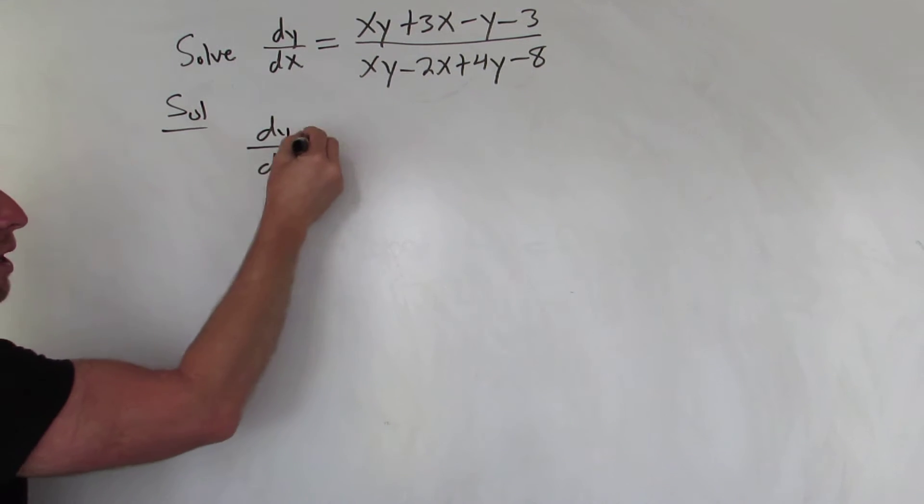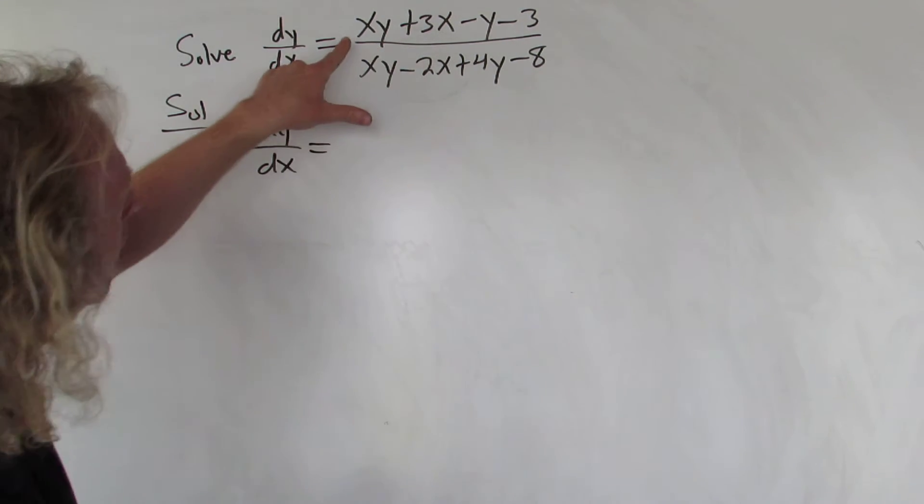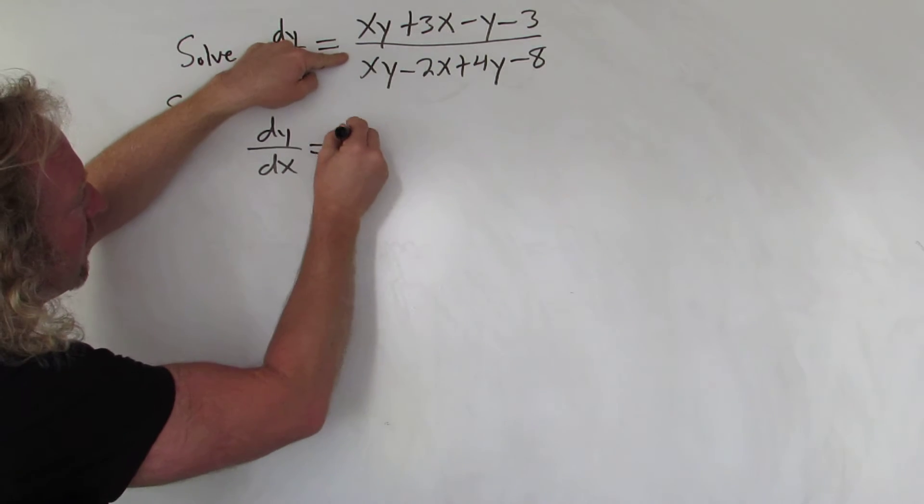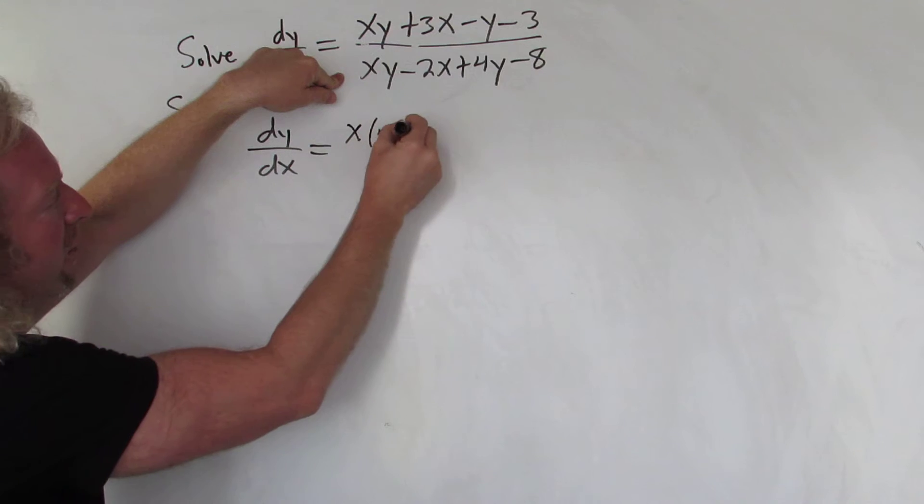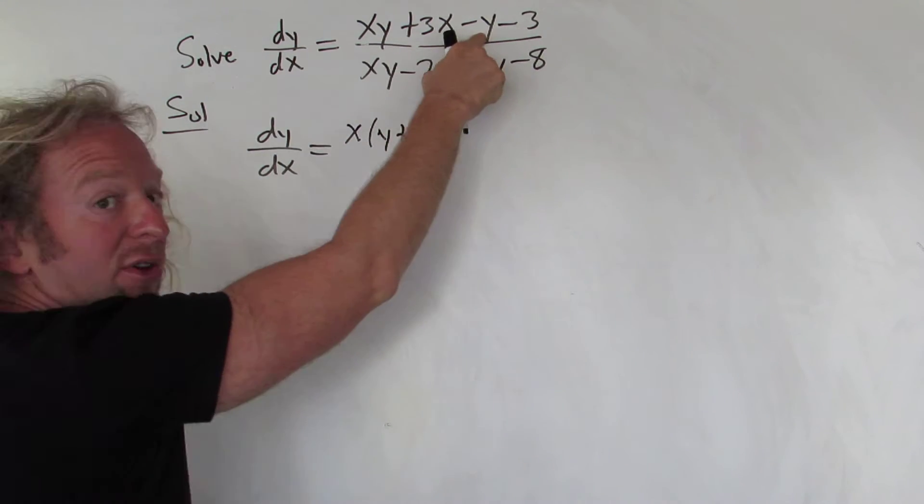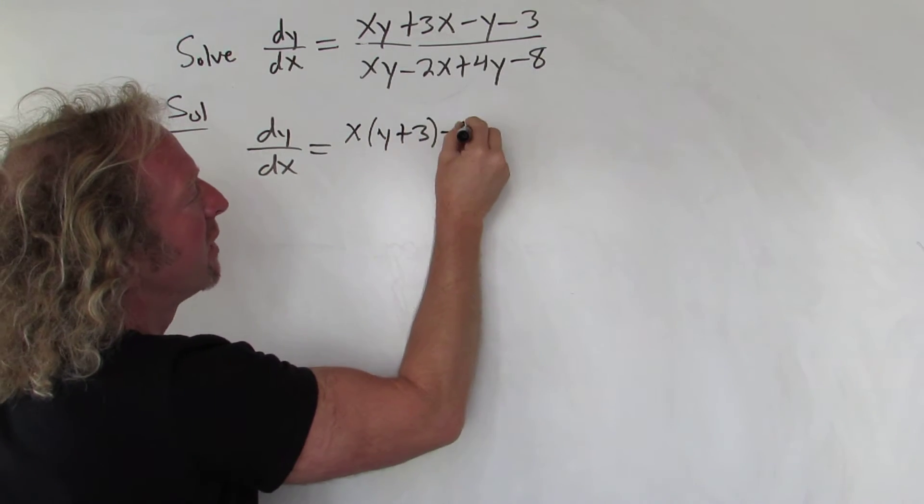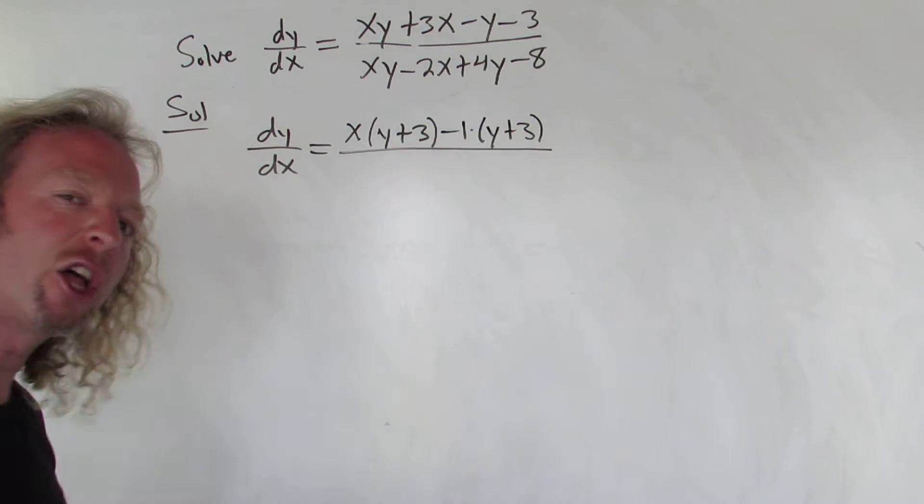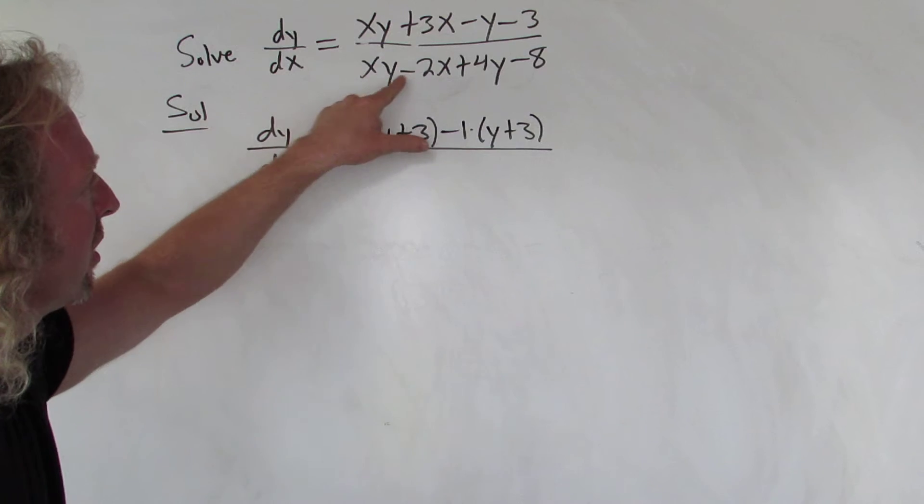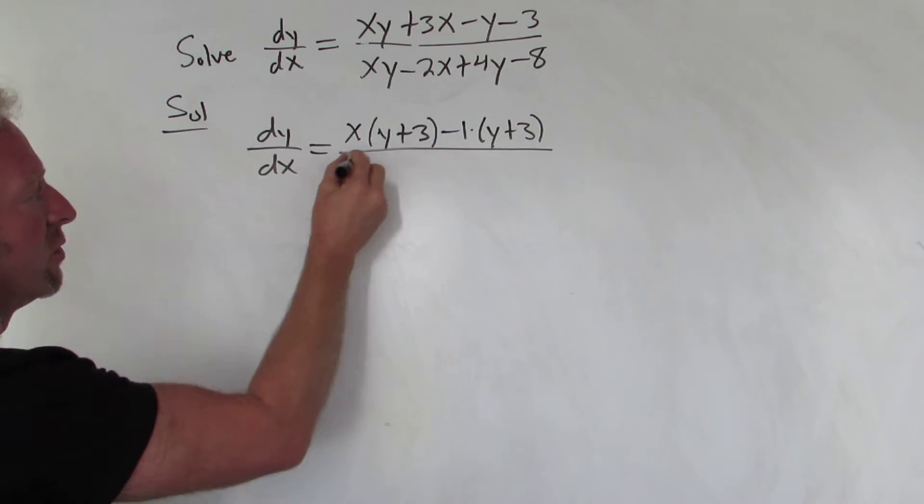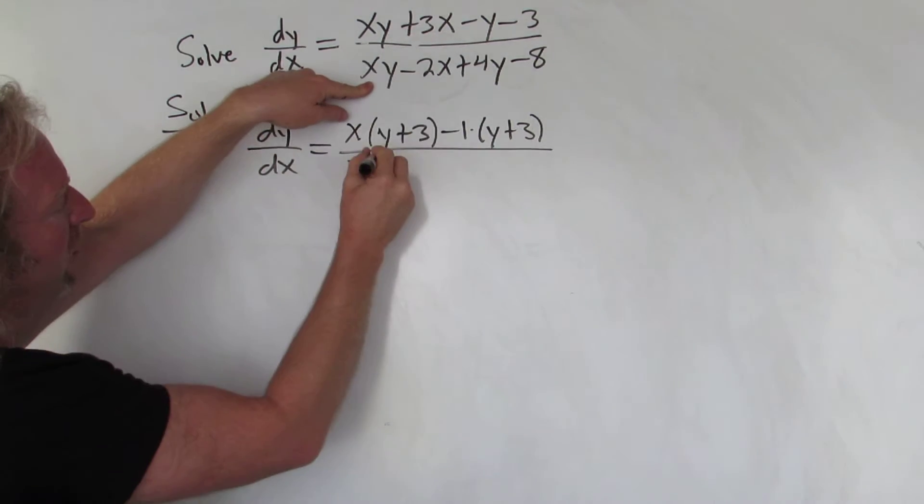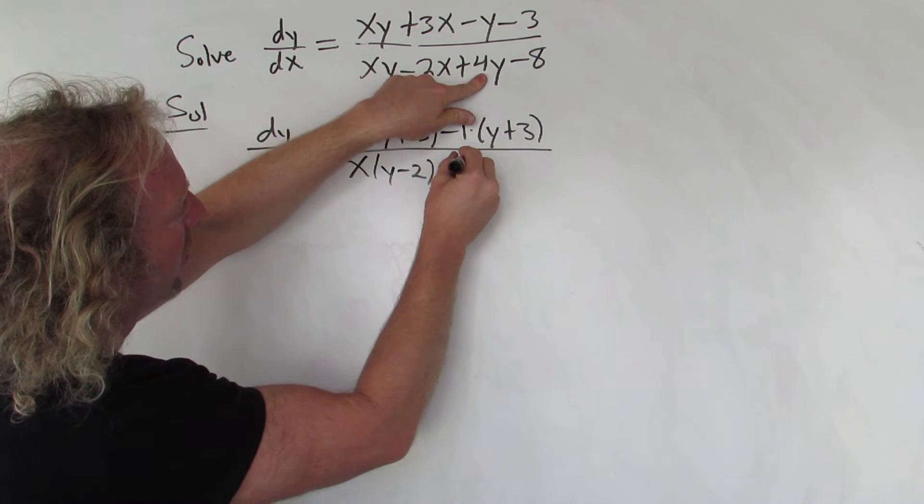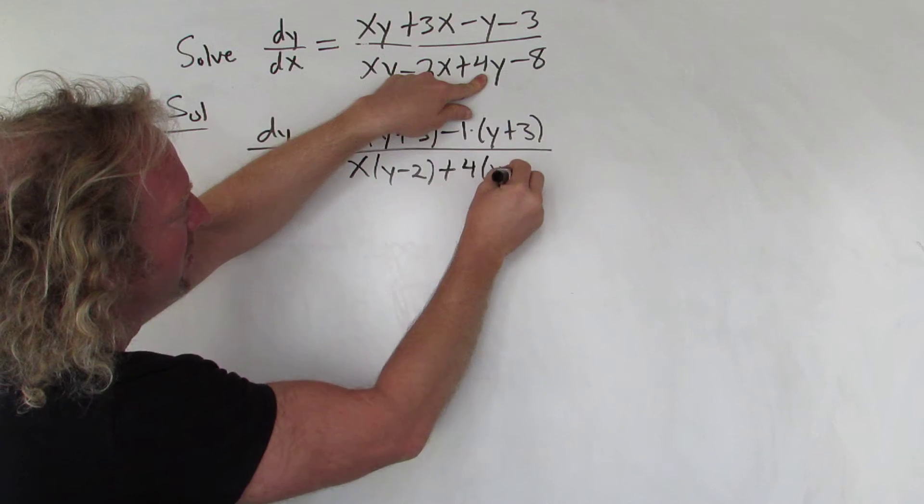The first thing we're going to do is factor by grouping. Up here you can pull out an x, so we get x(y+3), and then here we can pull out a negative one, so minus one times (y+3). On the bottom we can pull out an x here so we get x(y-2), then here you can pull out a four and we get (y-2).